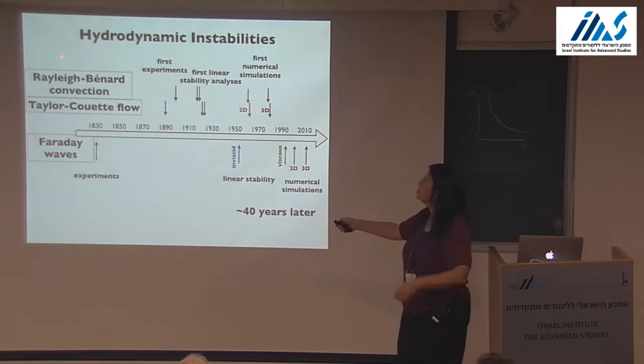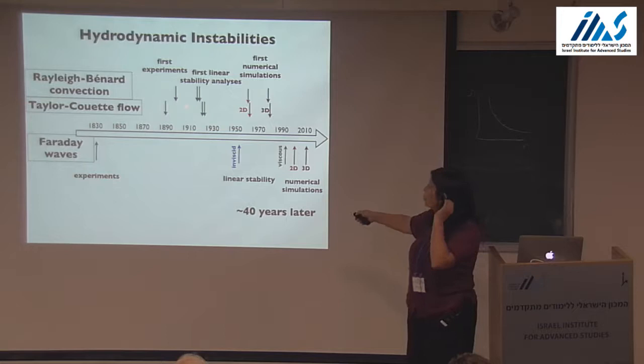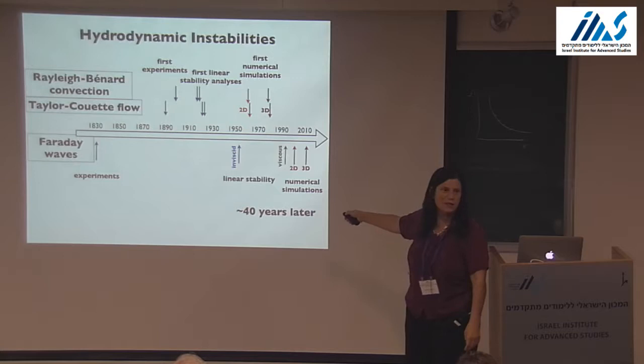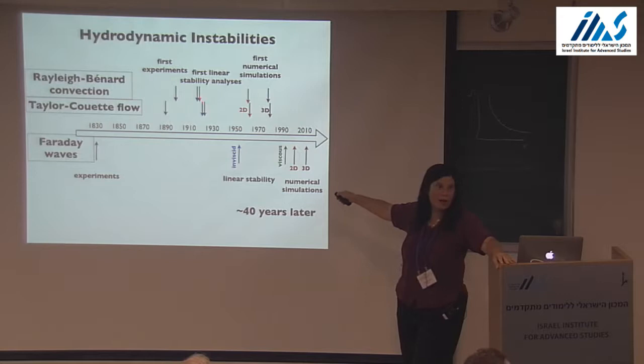If you look at the standard classic pattern-forming systems — Rayleigh-Bénard convection, Taylor-Couette flow — they were first seen experimentally by scientists in the 1890s by Couette and Mallock, and the first experiments by Bénard. The first linear stability analyses followed not long after: 1923 by Taylor and Rayleigh around 1916, both with viscosity and without.